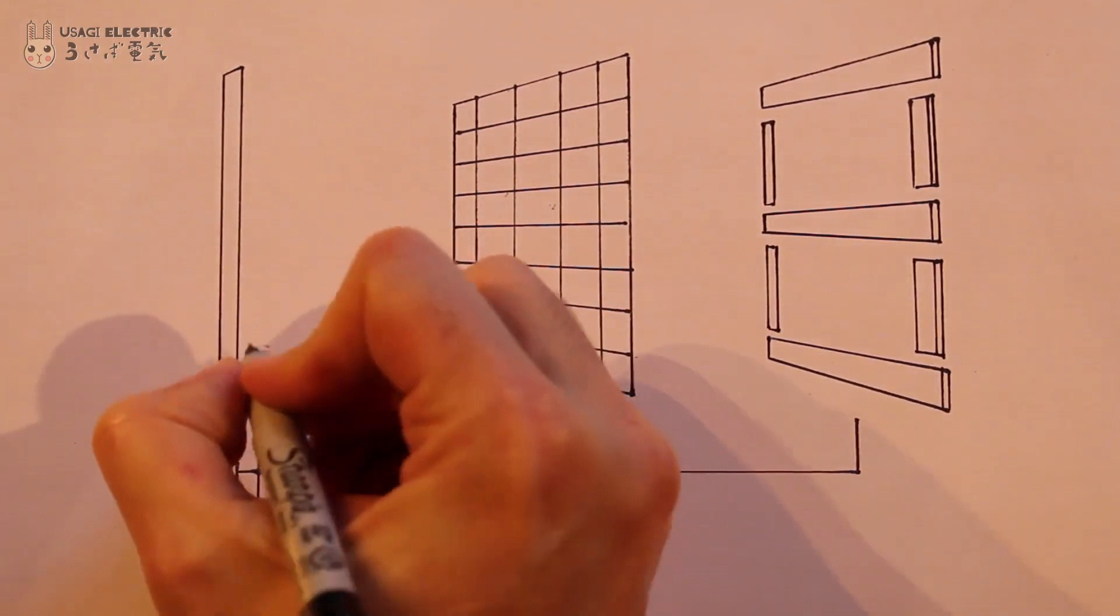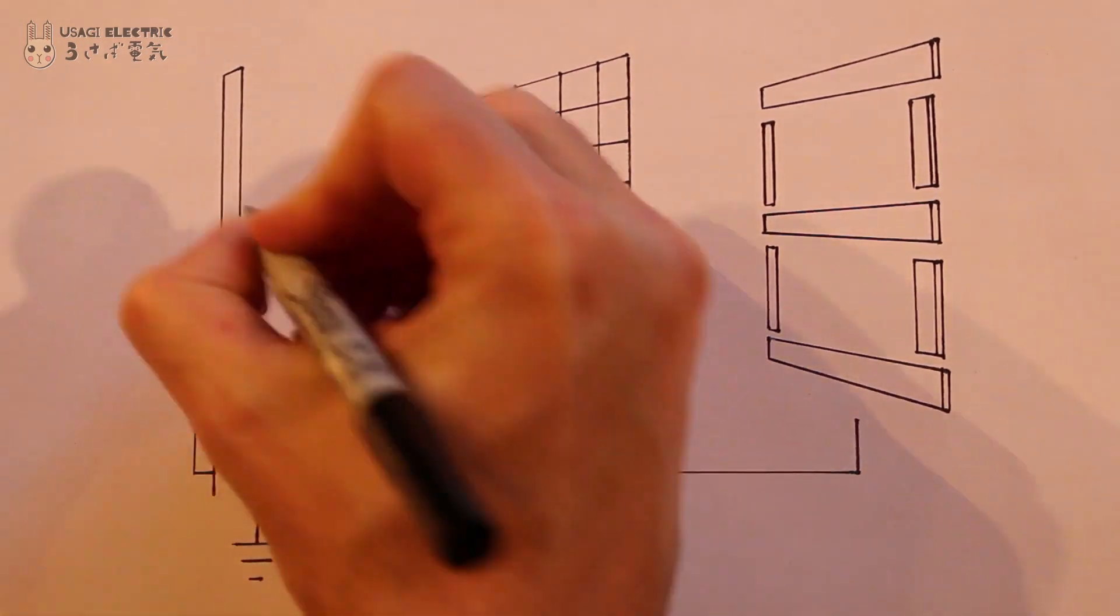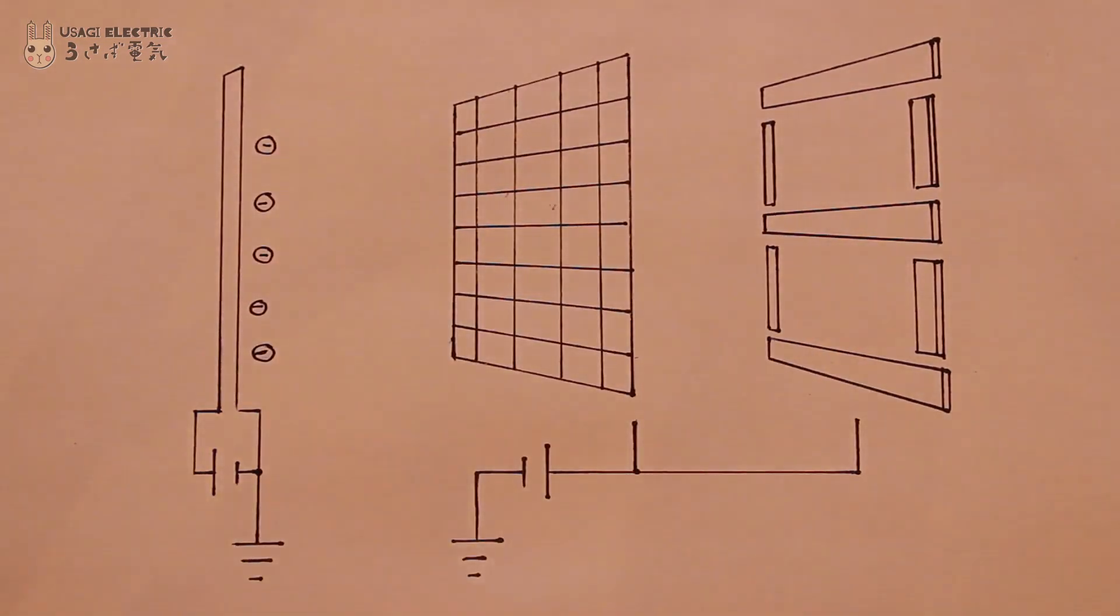The filament cathode heats up and begins to emit electrons. The grid controls how many of these electrons flow past towards the anodes.